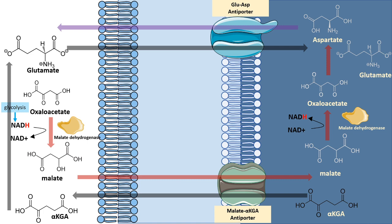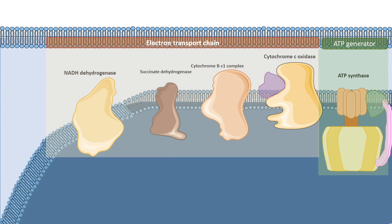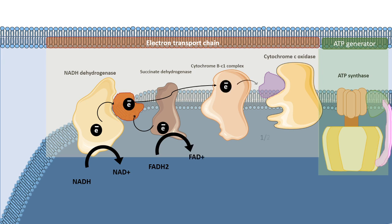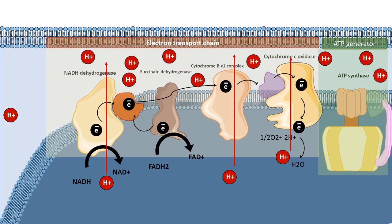The oxaloacetate produced in this process to regenerate NADH can either give rise to aspartate or go to the TCA cycle to generate more energy. The key event is regenerating NADH inside the mitochondria. That NADH donates electrons which move along the electron transport chain, pumping protons into the intermembrane space. Using that proton gradient, a large amount of ATP is generated via oxidative phosphorylation. The overall malate-aspartate shuttle is thus a mechanism to transport NADH from the cytosol into the mitochondria, bypassing the impermeable inner membrane.